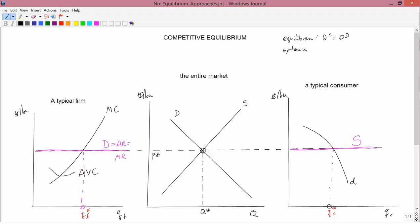That even though the consumer doesn't know anything about the firms, and even though the firms don't know anything about the consumers, that if you're at the equilibrium price P star...